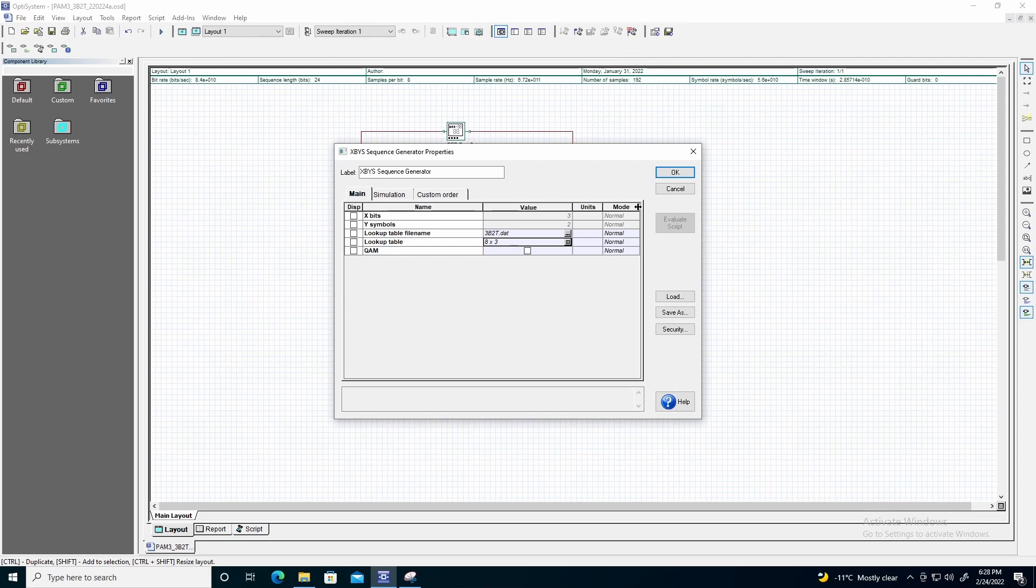The values for X bits and Y symbols have automatically been extracted and are 3 and 2, respectively.